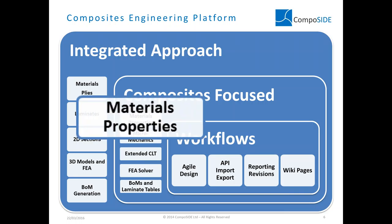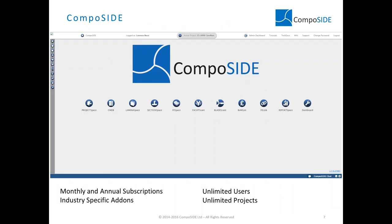Today our focus will be primarily on material properties for composite materials. The Composite dashboard includes a suite of modules covering the entire project development: project space for project management, CMDB the composite material database management module, lamina space for laminates, section FE space, 2D and 3D design environments and FEA solvers, BOMGEN for bill of materials generation, report space, and a dashboard which is a user management platform.